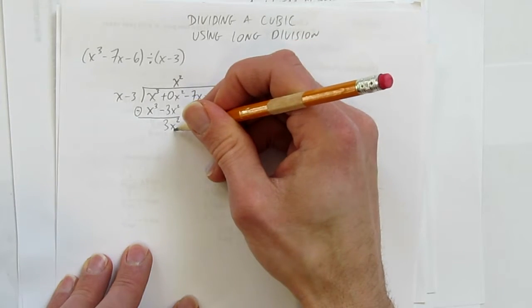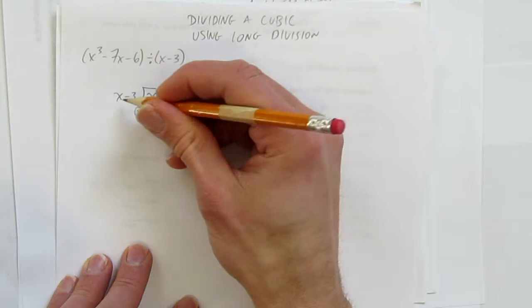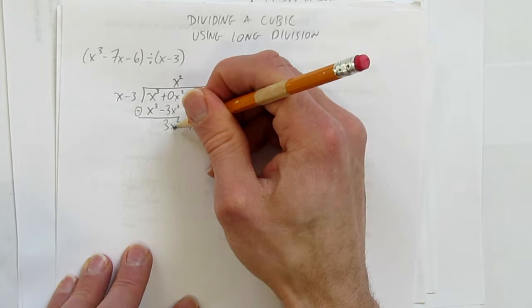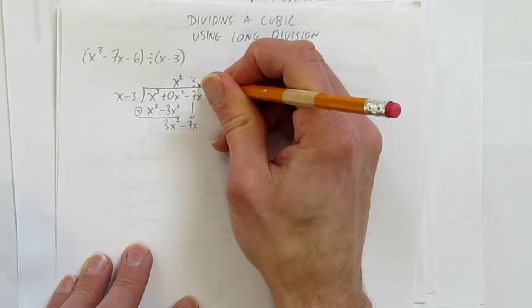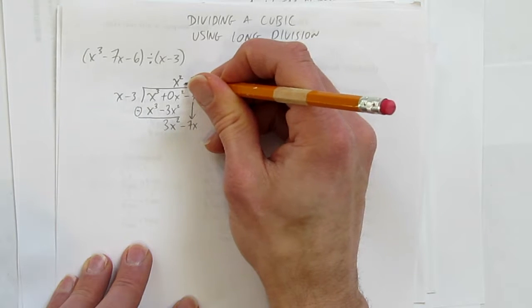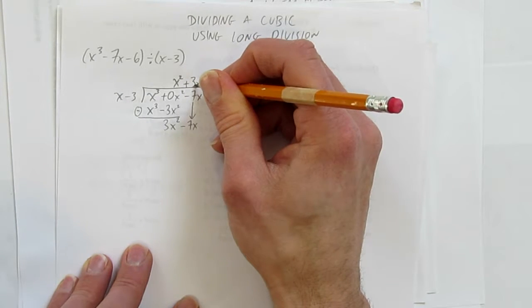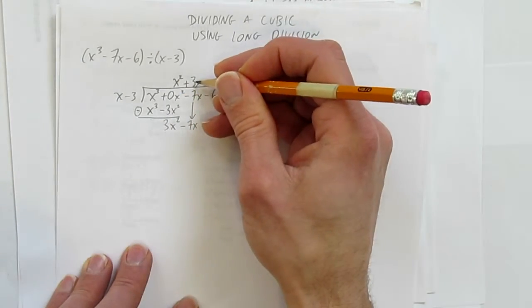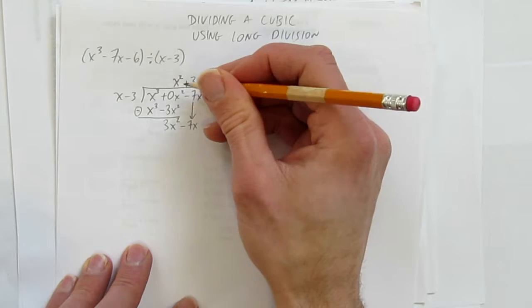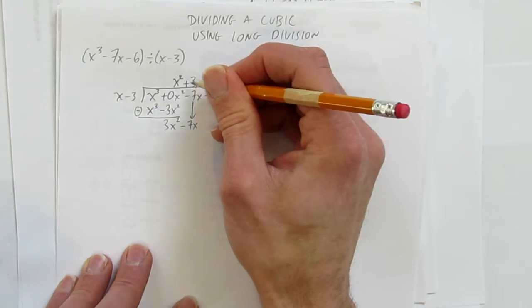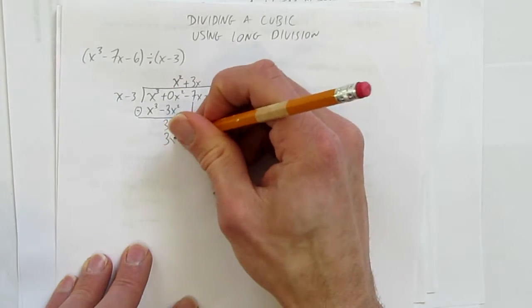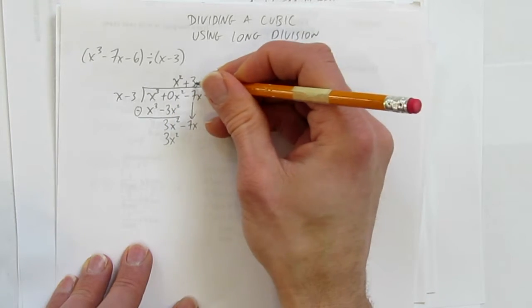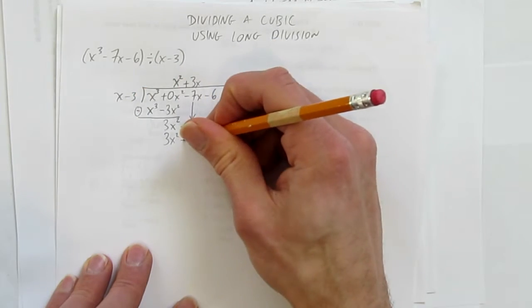Looking at this front term, how do we make 3x² based on x? We multiply by 3x. 3x times x gives 3x², which is what we wanted, so it'll subtract out to 0. 3x times -3 gives -9x.